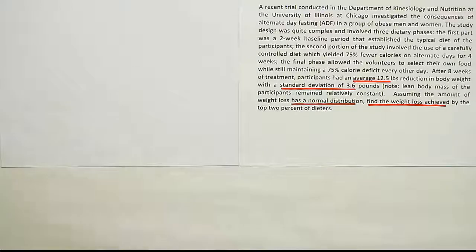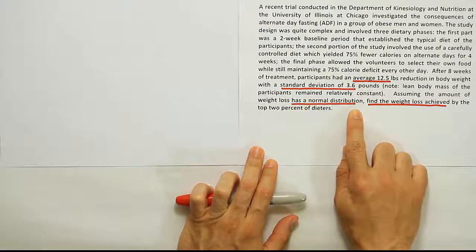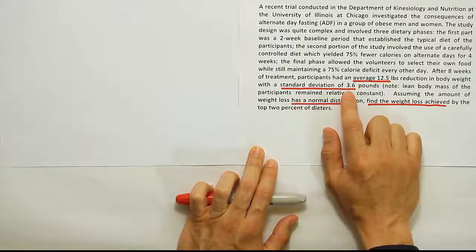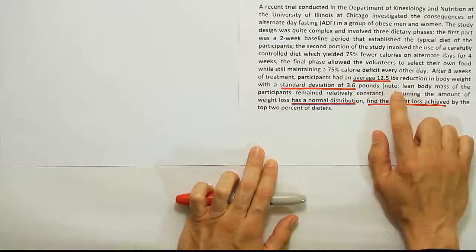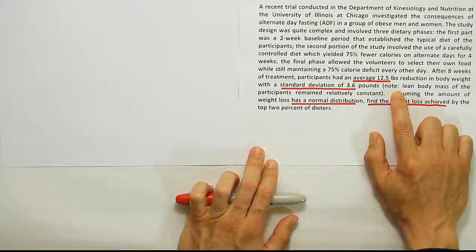Okay, so when you look at the things I've underlined, first thing I notice is that it tells me that the amount of weight loss has a normal distribution. The average amount of weight loss is 12.5 pounds and a standard deviation of 3.6 pounds. This note, even though it's not really statistically relevant for us, it's very important for the research itself.